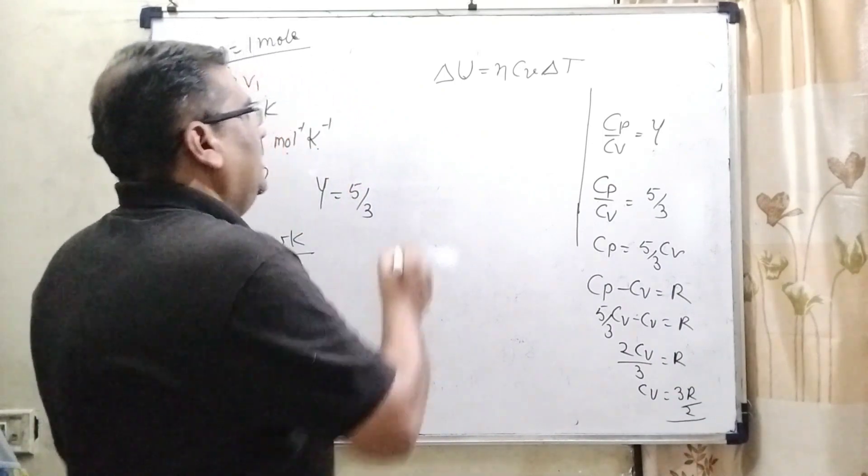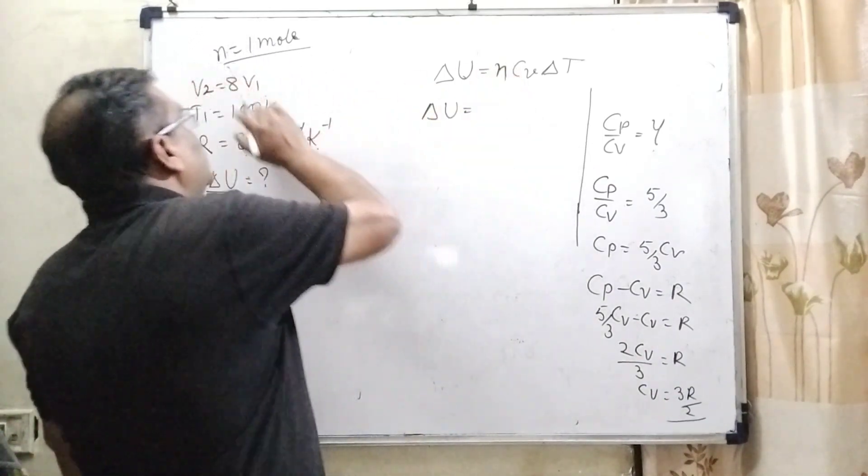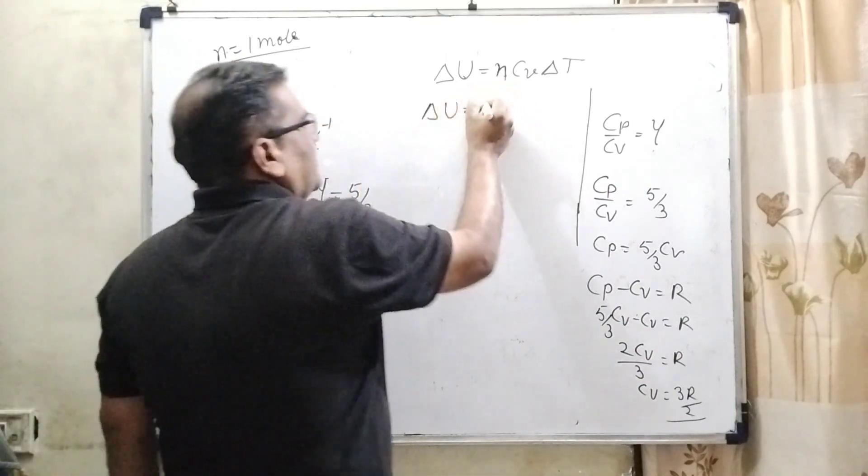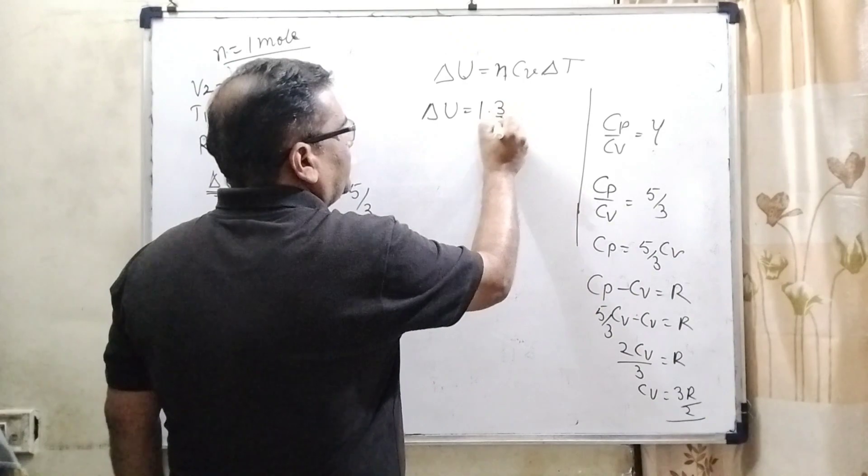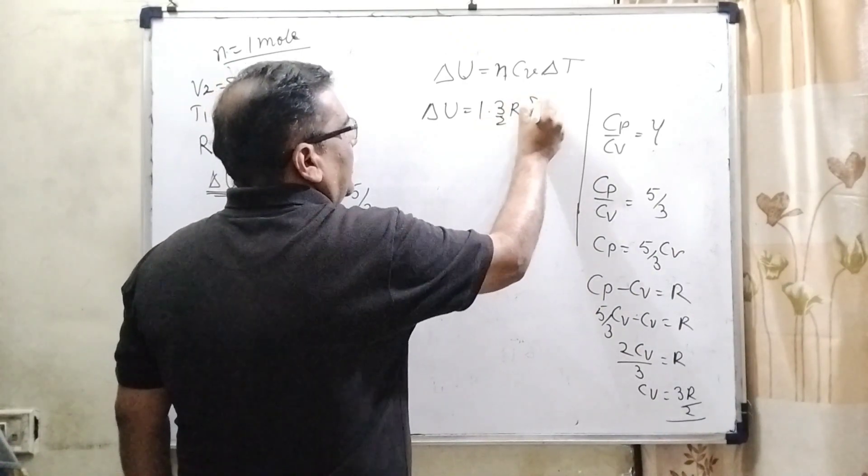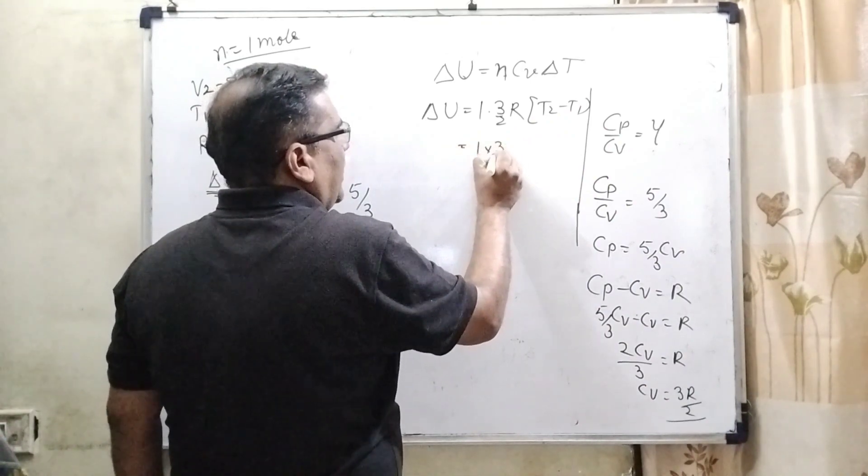Here, internal energy, value of N is given 1 mole. So we have substitute 1. And what is the value of Cv? 3 by 2 R. And delta T here T2 minus T1 that is 1 into 3 by 2.